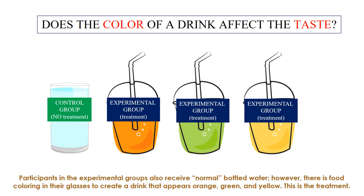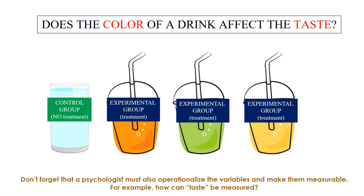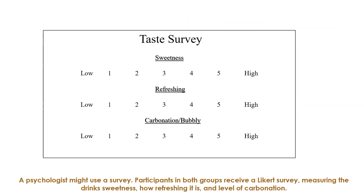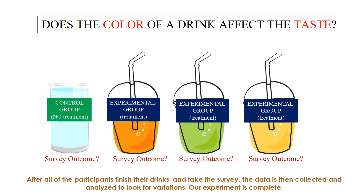This is the treatment. A psychologist might hypothesize that participants in the experimental groups will pick up hints of orange, lime, and lemon flavors because of the food coloring. The variables must also be operationalized and made measurable. For taste, a psychologist might use a survey where participants rate the drink's sweetness, how refreshing it is, and level of carbonation. This allows the psychologist to collect data on taste and compare responses of the control and experimental groups. After all participants finish their drinks and complete the survey, the data is collected and analyzed to look for variations.